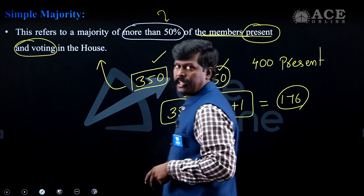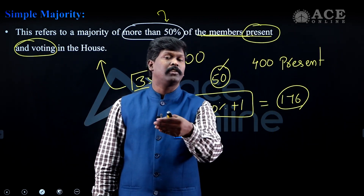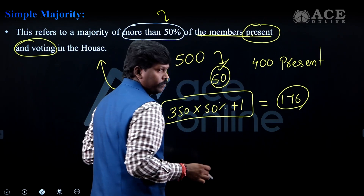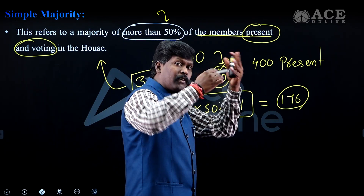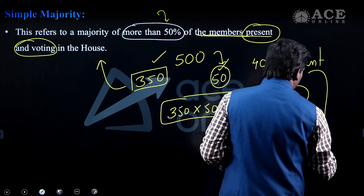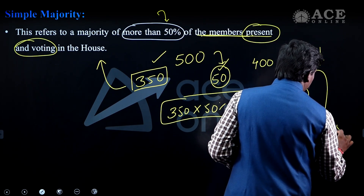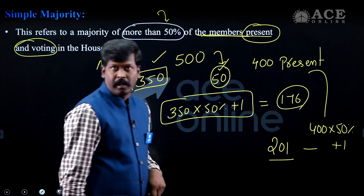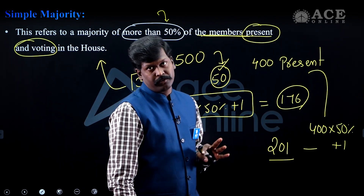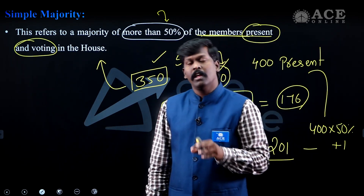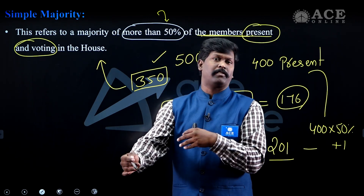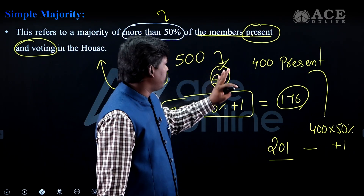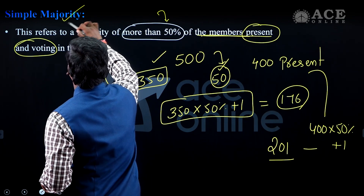The formula is more than 50% of the members present and voted. That means 350 into 50% plus 1, which comes to around 176. So if 176 or more members vote in favour, the bill passes. Members who abstain are not counted in the denominator.